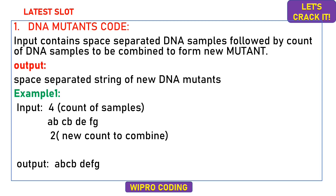The first question is about the DNA mutant score. The input is space-separated DNA samples followed by the count of DNA samples to be combined to form a new mutant. The output should print a space-separated string of new DNA mutants. For example, the first input is the count of samples — if you give four, there are four samples given in the second line: AB, CB, DE, and FG. The next line contains the count to be combined, like two.